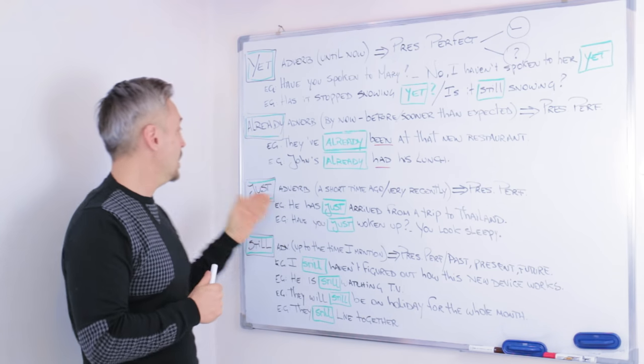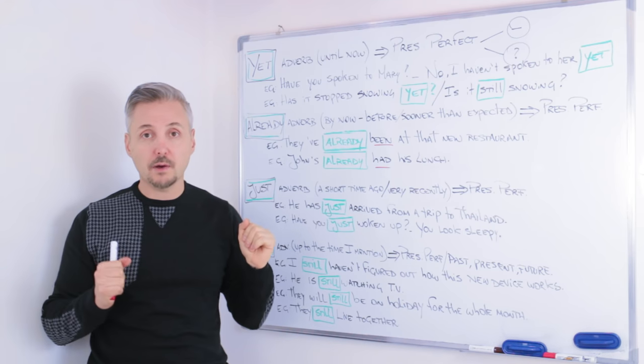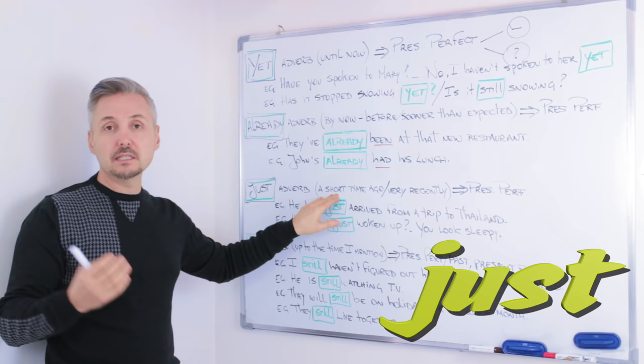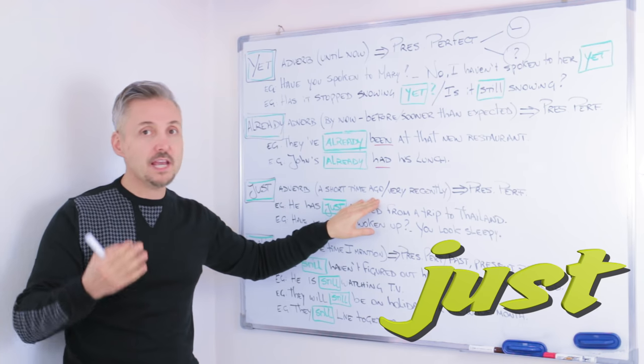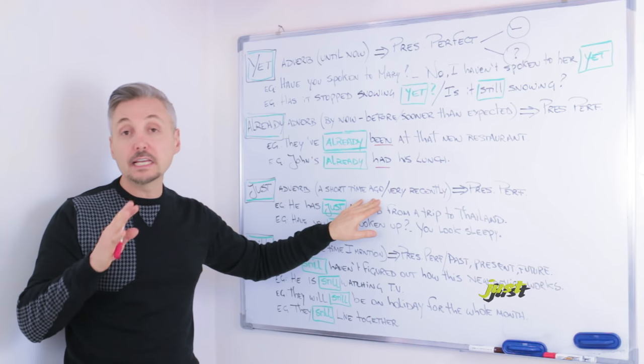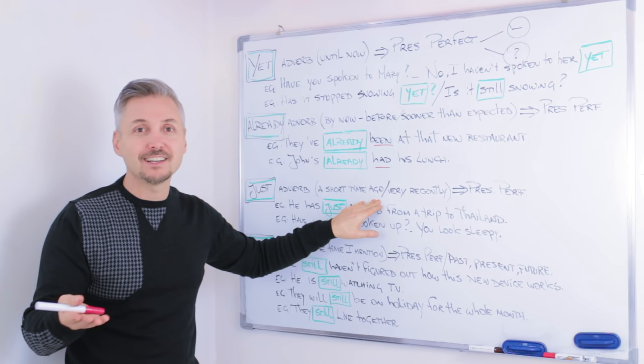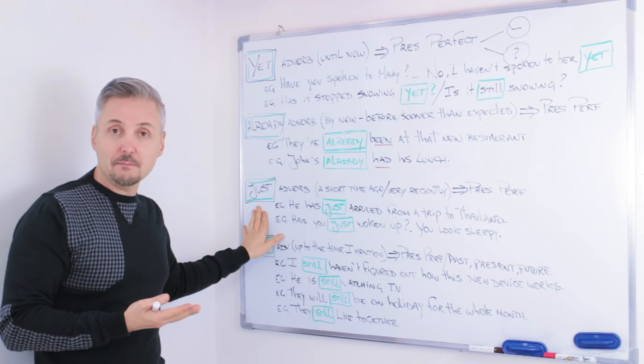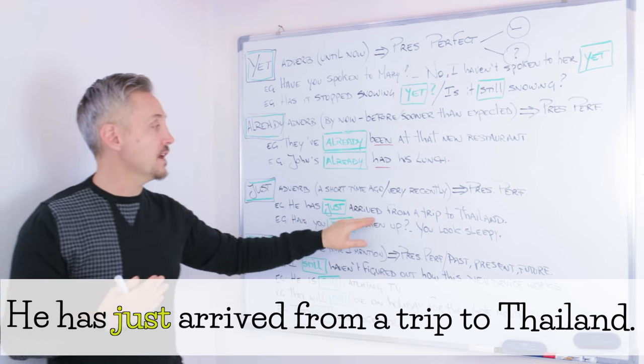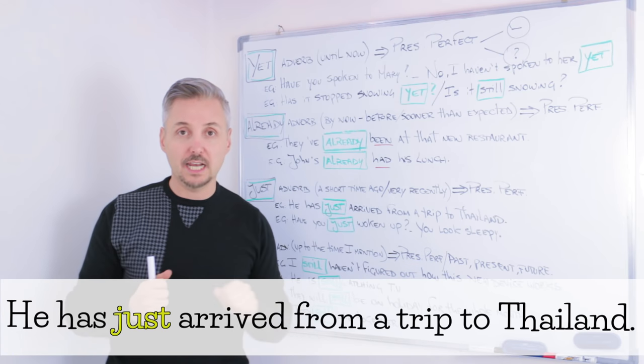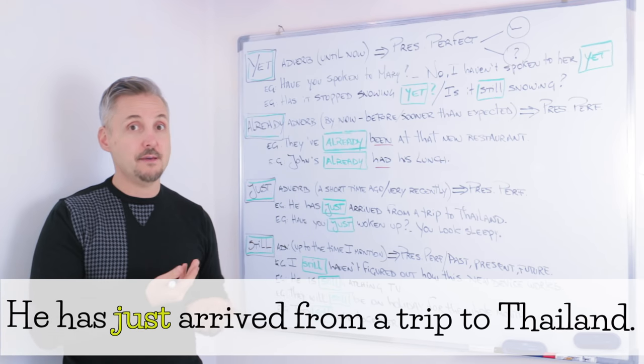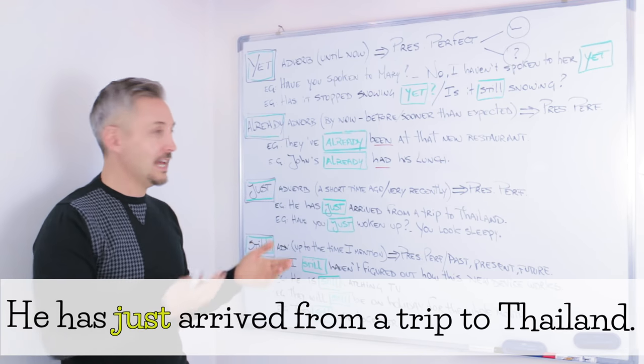Let's look at the third adverb that I'm going to talk about today. Just. Just means a short time ago, very recently. Just now, for example. So, is used with the Present Perfect. Obviously. So, the example that I listed at the beginning was, he has just arrived from a trip to Thailand. He has just arrived from a trip to Thailand. I can see him. This is what it means. I can see him. He's now here.